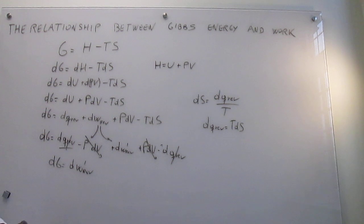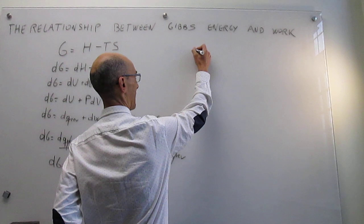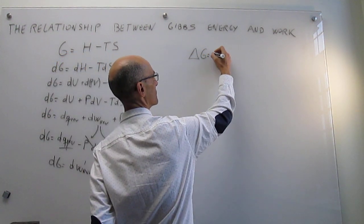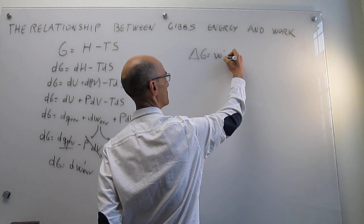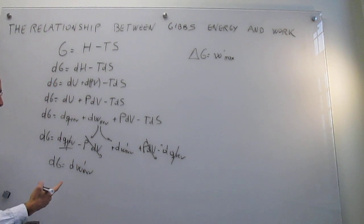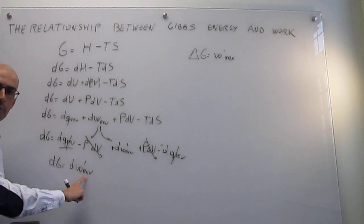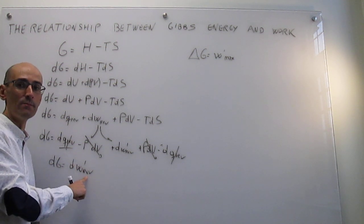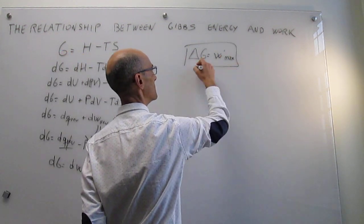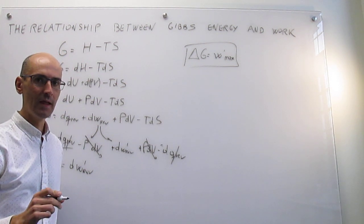We can integrate this very readily to recognize something very useful: the change in Gibbs energy in a process is equal to the maximum non-expansion work that you can extract from it. This is because in a reversible process you get maximum work. This gives a very useful connection between the Gibbs energy and the maximum non-expansion work.